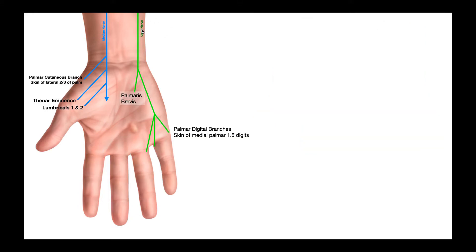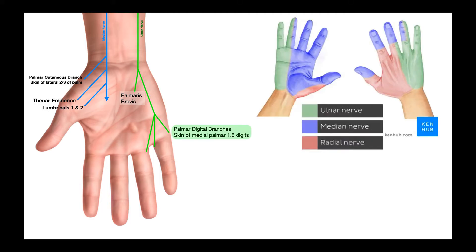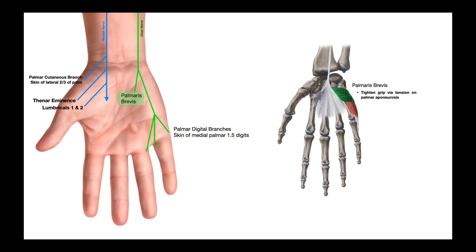The ulnar nerve also has palmar digital branches. Looking at the palmar digital branches, they supply the skin of the medial palmar one and a half digits — no longer on the dorsal side but now supplying the medial one and a half digits on the palmar side: the medial side of the fourth digit and all of the fifth digit. There is also palmaris brevis, which is not present in every person — it's actually a genetic variant. When present, it is innervated by this branch of the ulnar nerve, and its function is to tighten the hand grip by applying tension on the palmar aponeurosis.